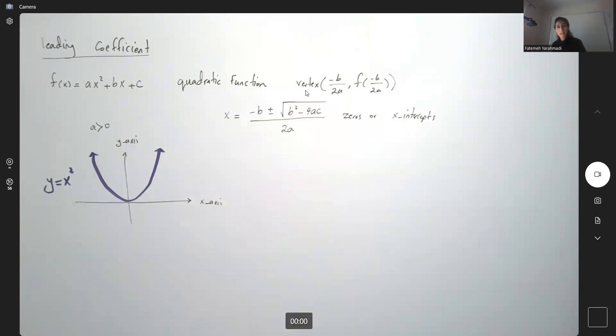It started before, but how do we formulate that? We say that as x goes to positive infinity...